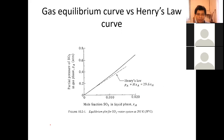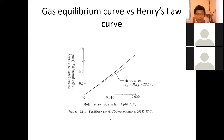The gas equilibrium curve versus Henry's law curve: Henry's law is a limiting law, just as you learned in physical chemistry. It is only accurate at low concentrations — when X sub A approaches zero. As concentration increases, reality deviates from Henry's law. This is similar to the ideal gas law, which is only valid at low pressure. At high concentrations, we need empirical tables and diagrams.